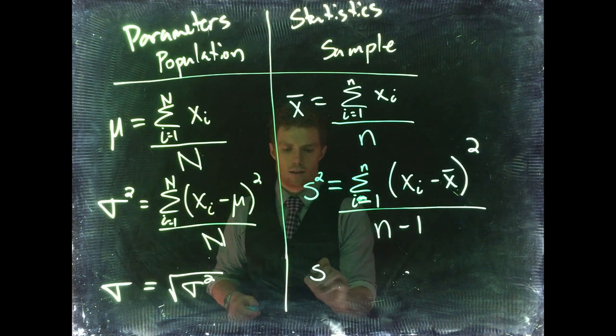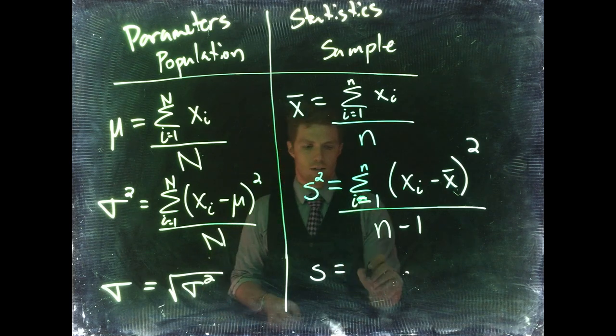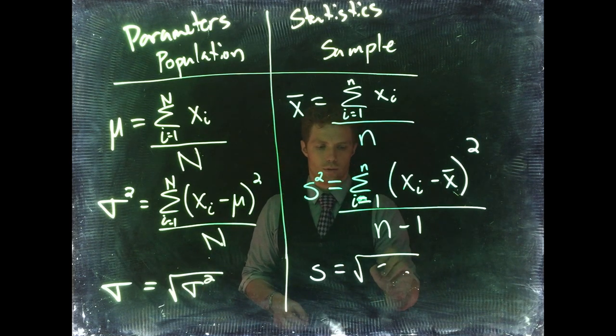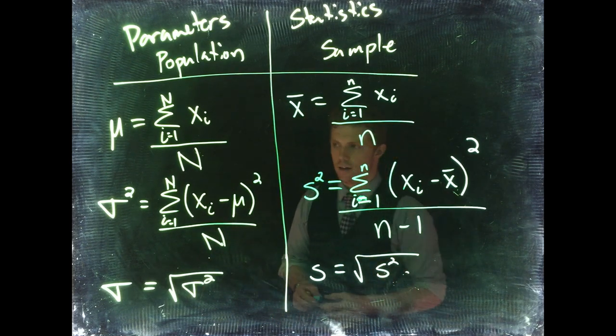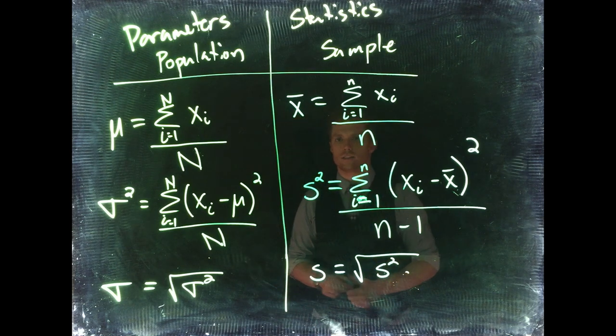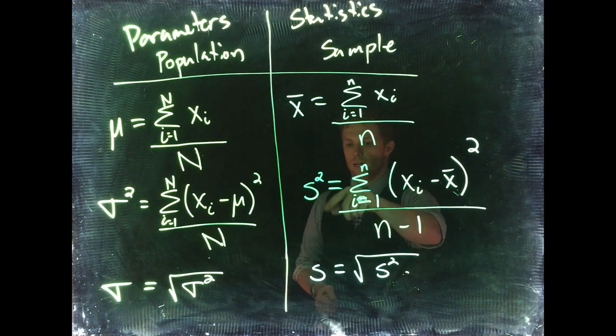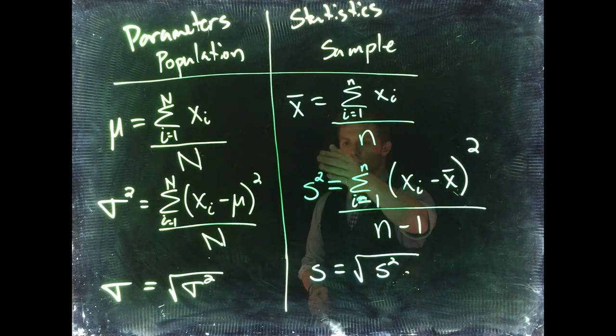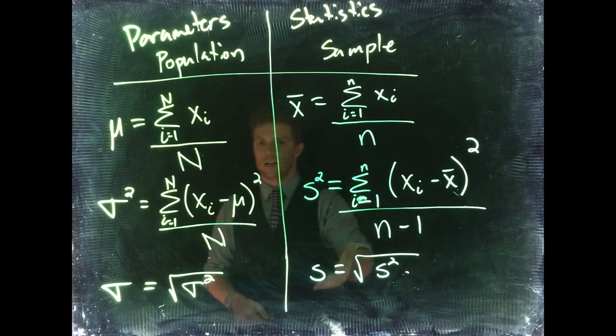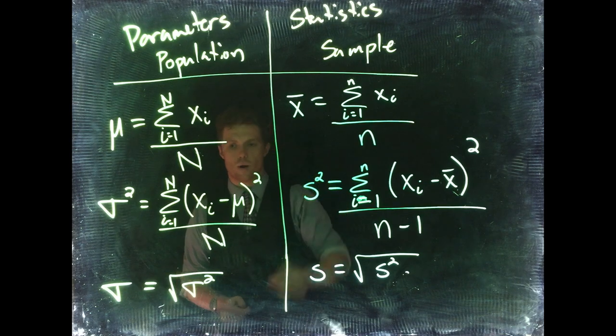Over here, same concept. The sample standard deviation just equals the square root of the variance. So going back and forth between variance and standard deviation is very simple. If you want to get to standard deviation from variance, take the square root. If you have the standard deviation and you want the variance, you just square the standard deviation.